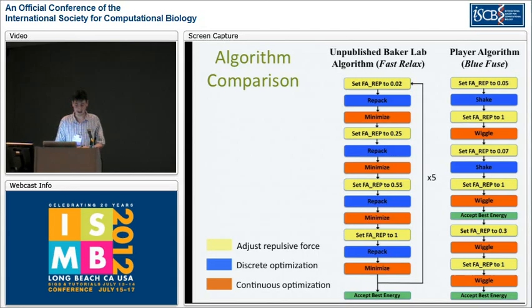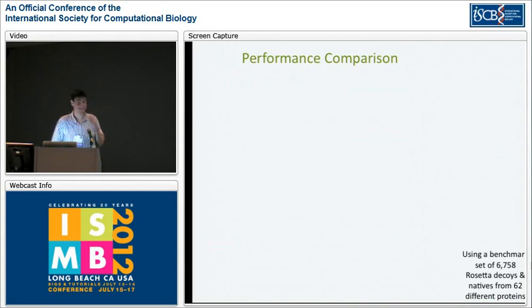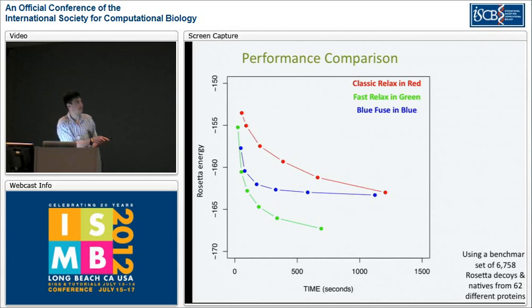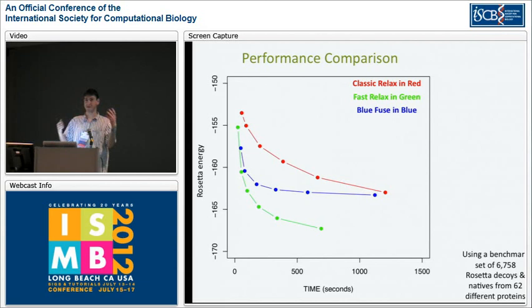FastRelax does this five to fifteen times depending on how thoroughly you want your protein relaxed. We ran this on a benchmark of Rosetta decoys and natives. The previously published ClassicRelax algorithm — basically the more you run it, the lower your Rosetta energy gets. FastRelax obviously performs much better. BlueFuse really flattens out, which makes sense from a gaming perspective — if you came up with an algorithm that just keeps getting a higher score the more you run it, you would obviously use that one. But that's not how it works, and the players weren't able to come up with that.